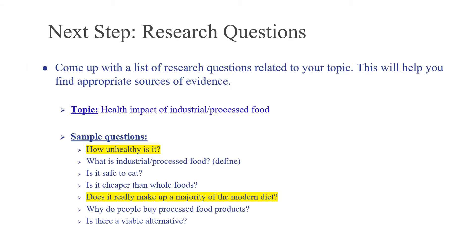Next, take your narrowed topic and come up with a list of research questions. These are all pre-writing steps — things you do before you set out to write or even research. We're just brainstorming, which is a step many people skip. We think it saves time, but really we end up doing all this work later when we're further along in the process. So do this pre-writing before you start the research or any of the writing.